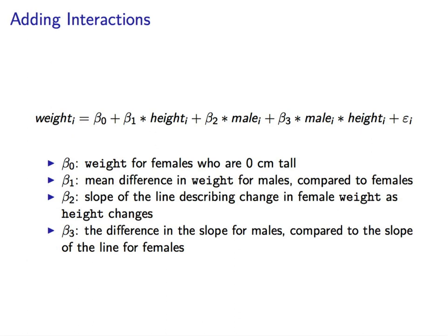Beta 1 is the main difference in weight for males compared to females at the intercept. So on average, males will weigh beta 1 kilograms more than females at the intercept. That is for individuals who are 0 centimeters tall. Again, this doesn't make a whole lot of sense, but it will make our model fit better.